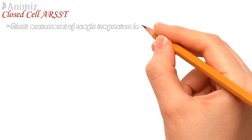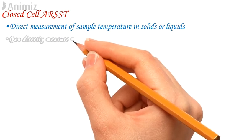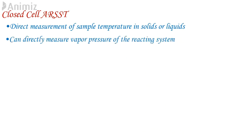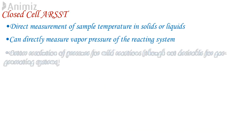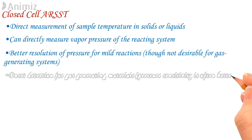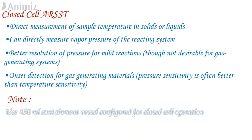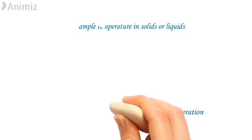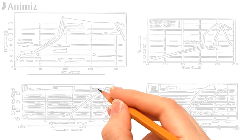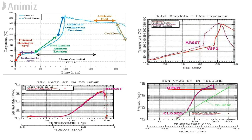Advantages of closed cell ARSST include: direct measurement of sample temperature in solid or liquid state, direct measurement of vapour pressure of the reacting system, better pressure resolution for mild reactions, and onset detection for gas-generating materials. It is recommended to use a 450 ml containment vessel configured for closed cell operation. ARSST is used to estimate process safety parameters including heat of reaction, heat of mixing, total adiabatic temperature rise, onset temperature, tempering temperature, self-accelerating decomposition temperature, and time to maximum rate.